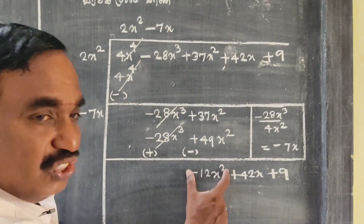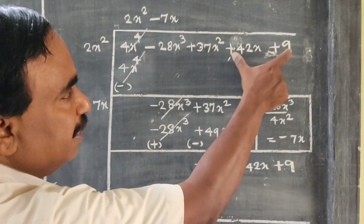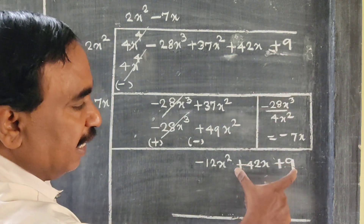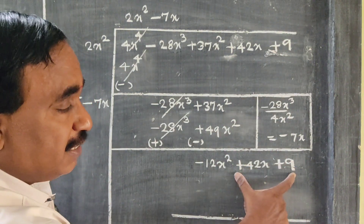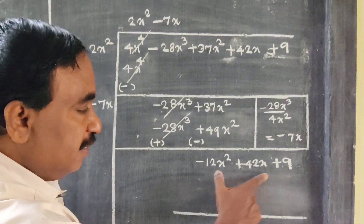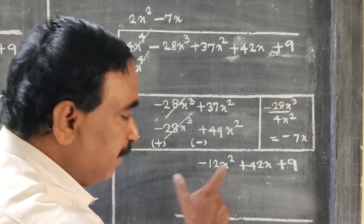Bring down the next terms: plus 42x plus 9. Sign change — we need to fill the next step.